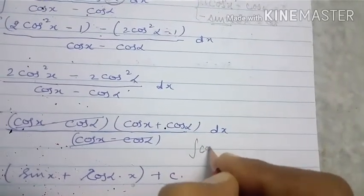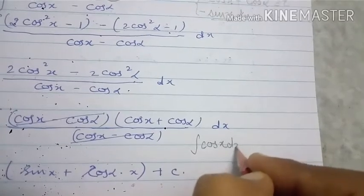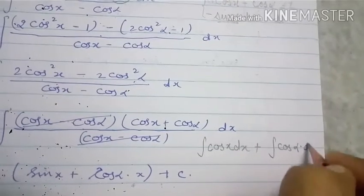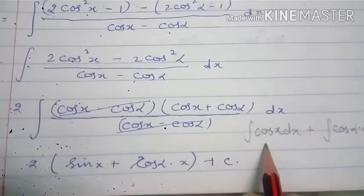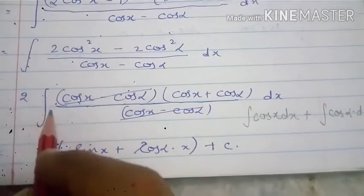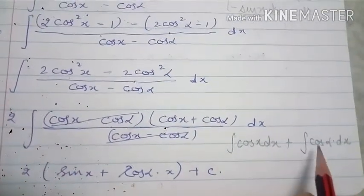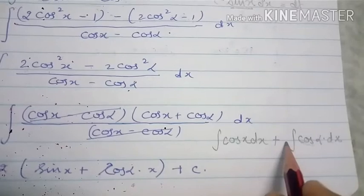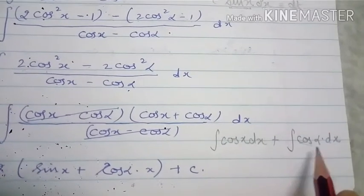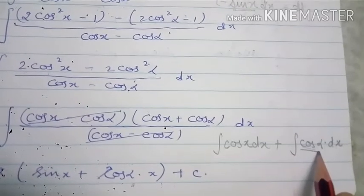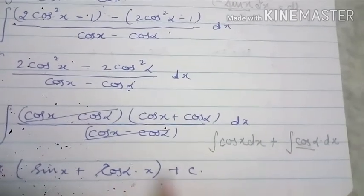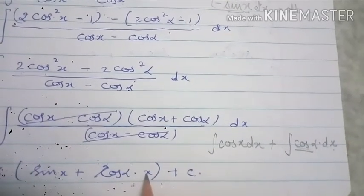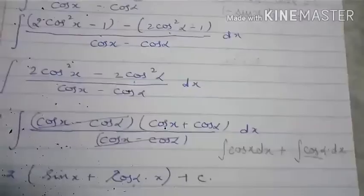So we integrate cosx + cosα dx, which splits into ∫cosx dx + ∫cosα dx. The integral of cosx is sinx. cosα is a constant with respect to x, so it shifts outside the integral, giving cosα · x. The final answer is sinx + x·cosα + c. Thank you.